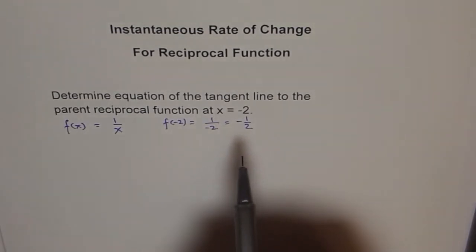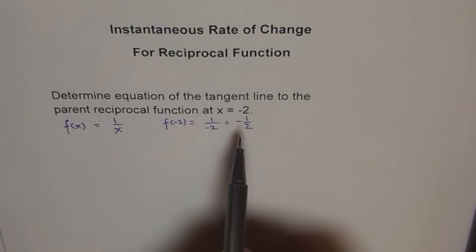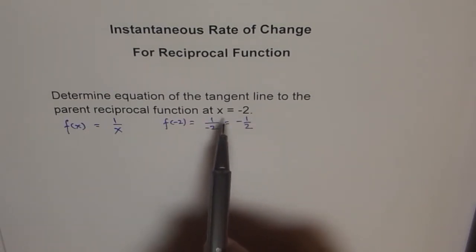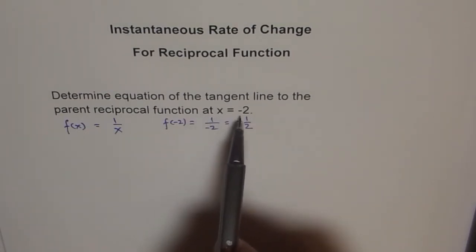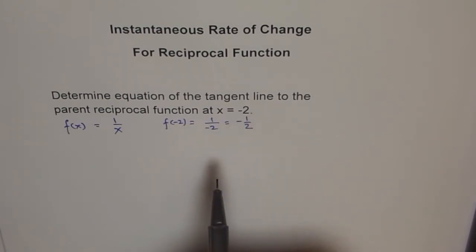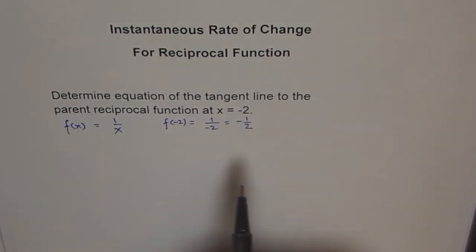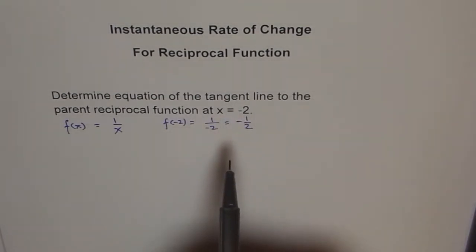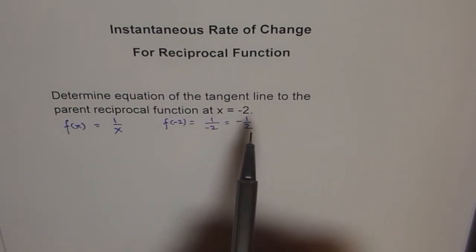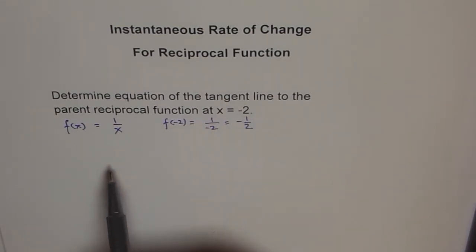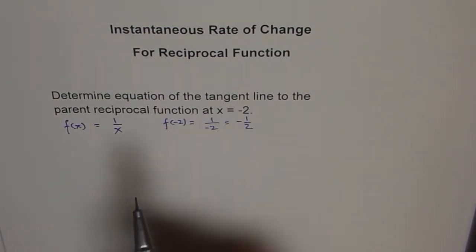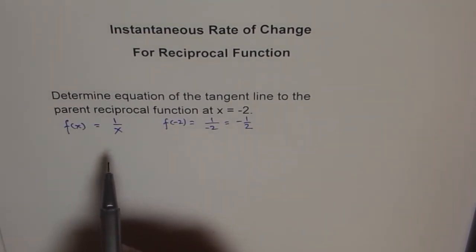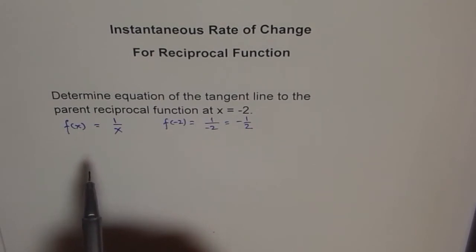To find the equation of a tangent line, we should first find the slope at x equals minus 2. Once we know the slope, we can find the equation of a line using y equals mx plus b. To find the slope of the tangent line on the curve 1 over x, we use the difference quotient method, which gives us the instantaneous rate of change at a point, which is the slope of the tangent line.